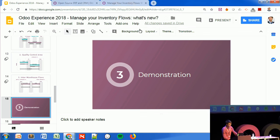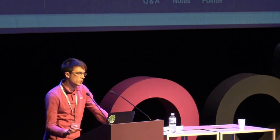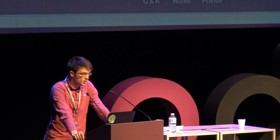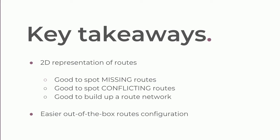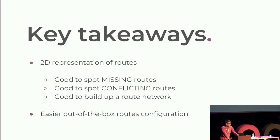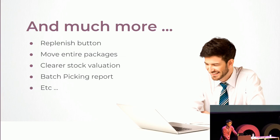That concludes the demonstration. To wrap up: the 2D representation of routes will be very useful for spotting missing routes in your warehouse networks and understanding conflicting routes. Out of the box, you now have more facilities to configure routes easily.